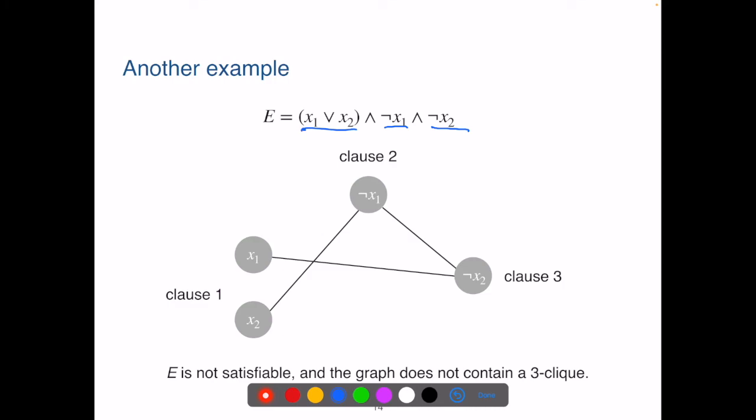E is not satisfiable. For the first clause to be true, we know x1 needs to be true or x2 needs to be true.